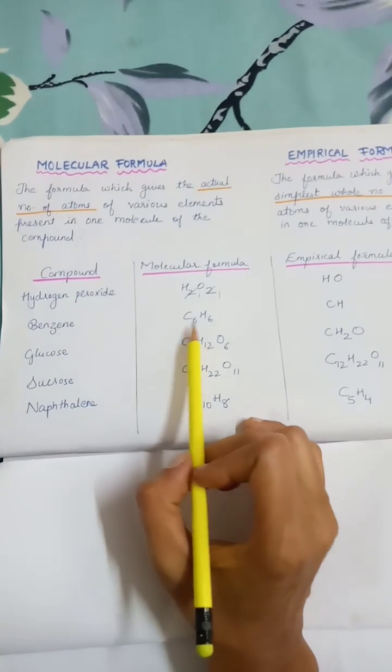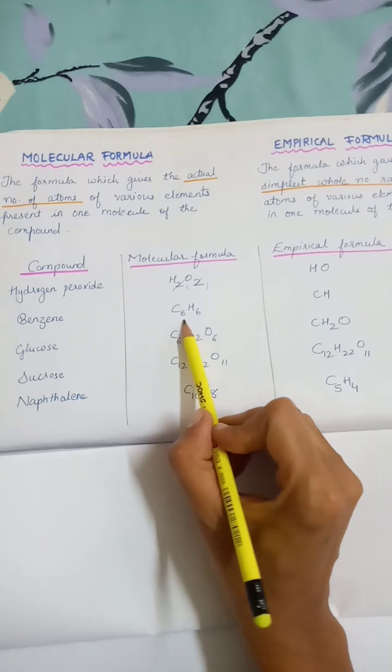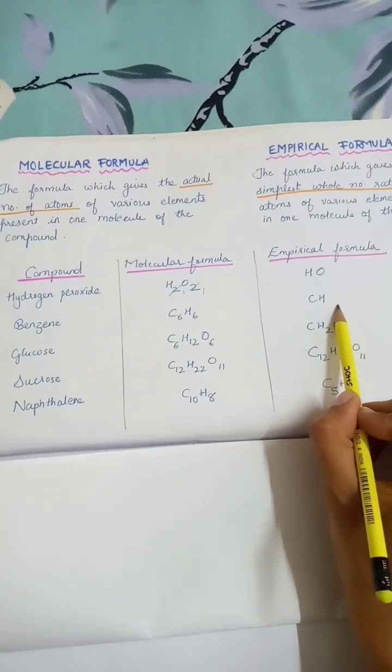Similarly for benzene, it is C6H6. So when you are taking the ratio, you get C1H1.